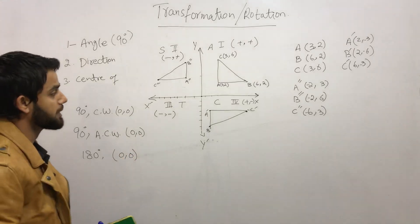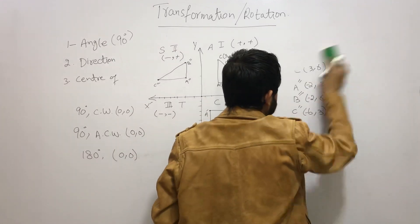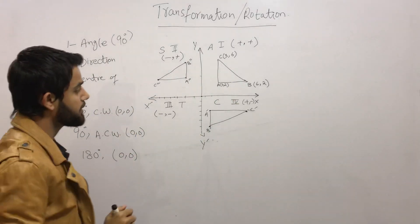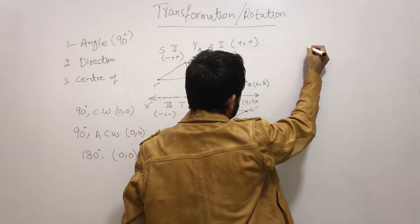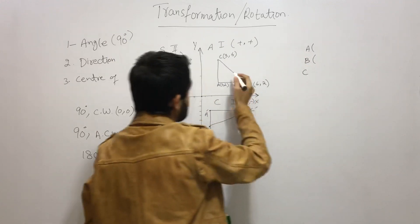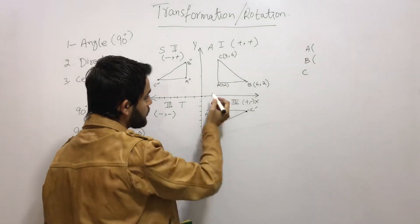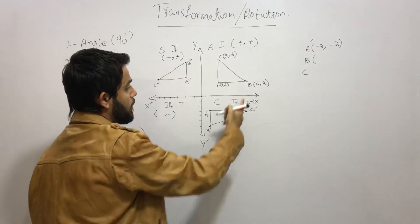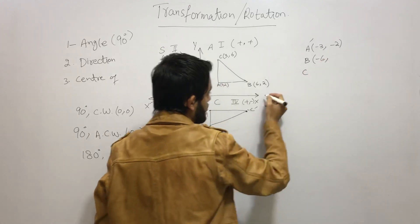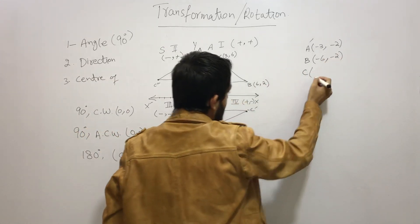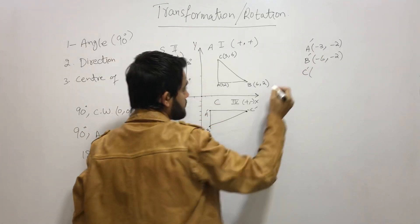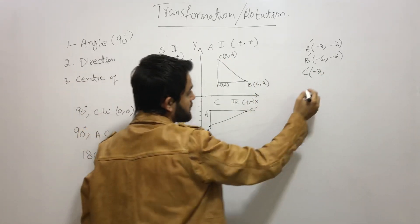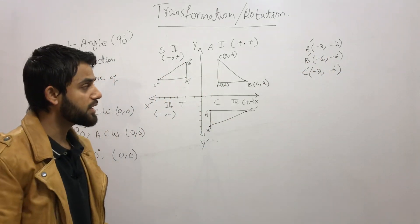For 180 degree rotation with center at (0, 0), take the same triangle ABC and simply take the opposite of each coordinate. A(3, 2) becomes A prime (-3, -2). B(6, 2) becomes B prime (-6, -2). C(3, 6) becomes C prime (-3, -6).